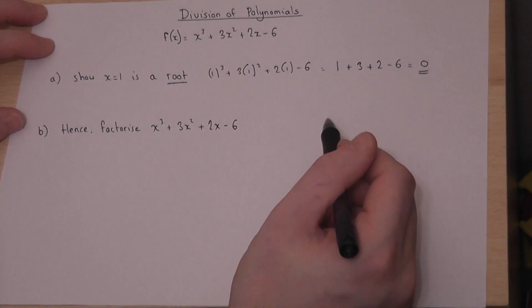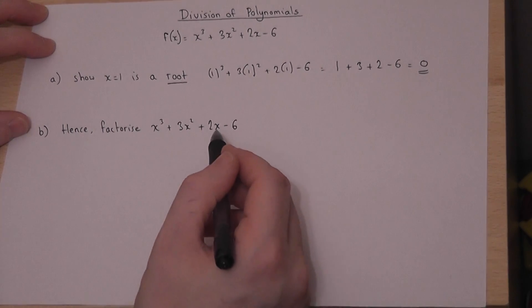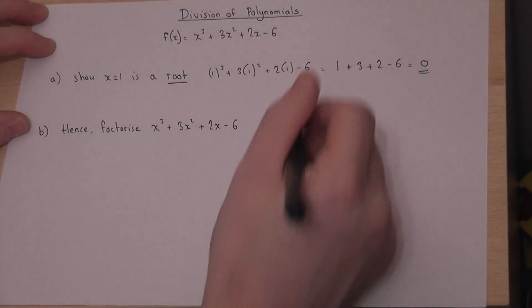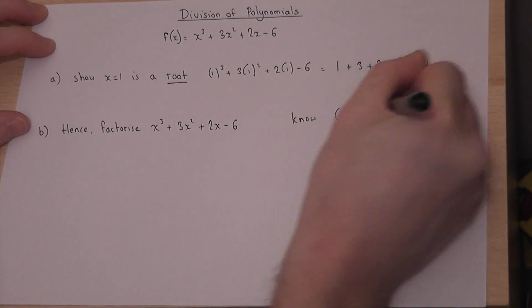Right, the next part is the trickier part. Hence factorize. Now because we know that 1 is a root, then we know that x minus 1 is a factor.